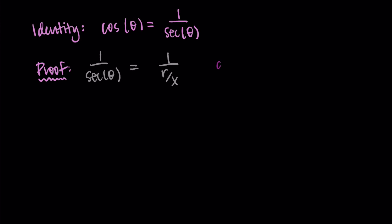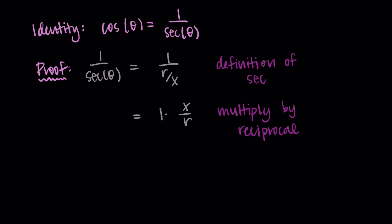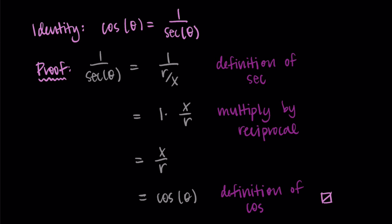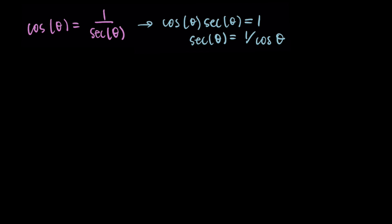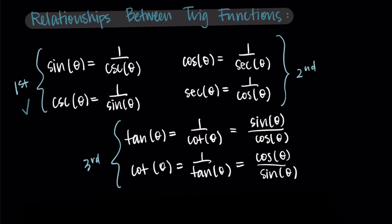By definition, secant is r over x. So I have one over r over x as one over secant. Now I'll simplify by multiplying by the reciprocal: one times x over r, which is just x over r. That is the definition of cosine — x over r is cosine of theta. We can similarly rearrange things to get the other identity: multiply the secant over to get cosine times secant equals one, then divide by cosine to get secant equals one over cosine. Those are our second pair of identities.